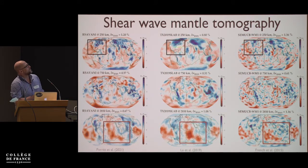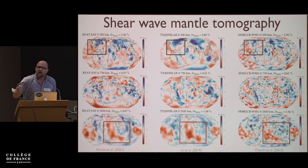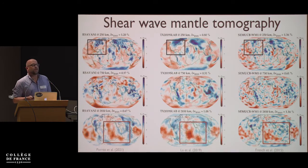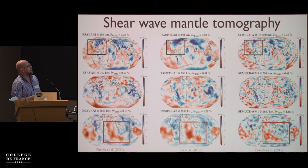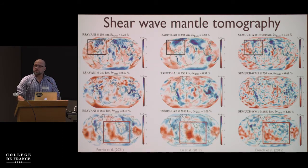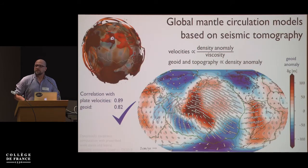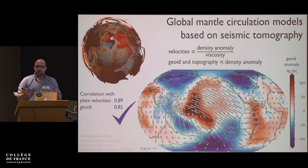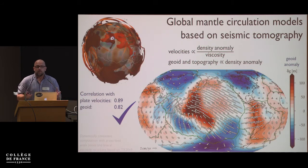It does a good job improving resolution in the upper mantle, which is important if you're interested in dynamic topography — Bernard Steinberg is going to talk about some of that — while not completely messing things up in the lower mantle. Broadly speaking, as we heard earlier, the shear wave structure of these models is consistent. What you can do is take the structure, convert it into temperature, make assumptions about rheology, and then come up with forward models.